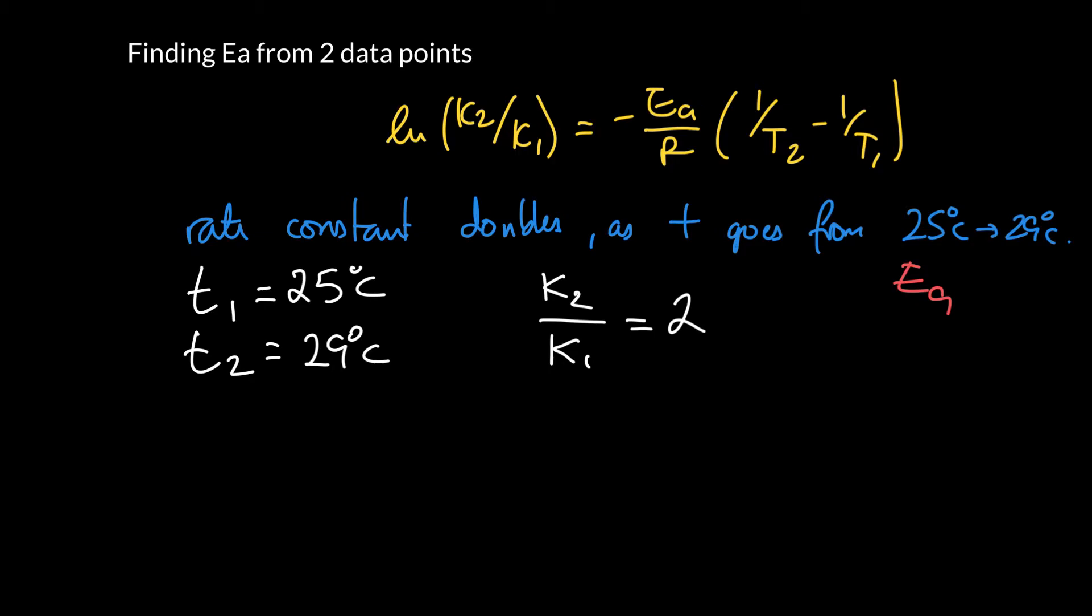The first thing you'll notice is that I've written lowercase t and up here I've written uppercase T. The reason for that is when I write uppercase T, I mean the absolute temperature. We can convert from Celsius to Kelvin by adding 273.15, so that's 298 Kelvin.